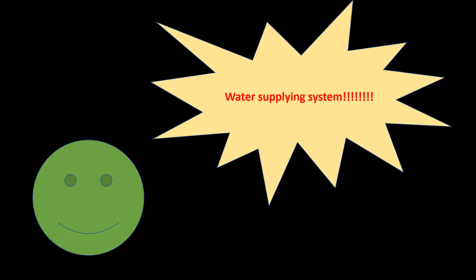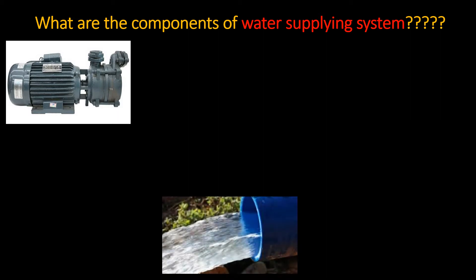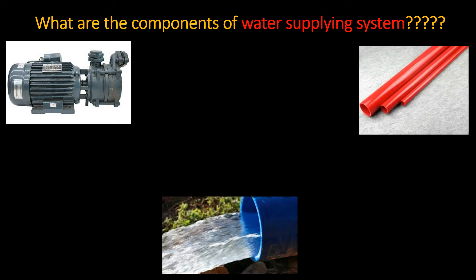If we consider the components of the water supplying system of the houses, we can see that there should be a pump, the water which is the medium, and the pipelines. These are the three main components important for the water supply in houses. Now, do you think this type of supplying system is also present in living organisms? Yes, this supplying system is also present.